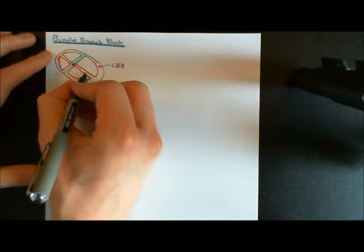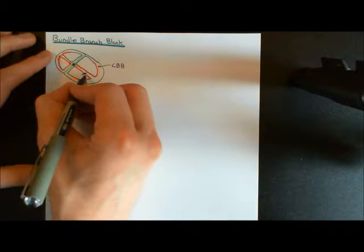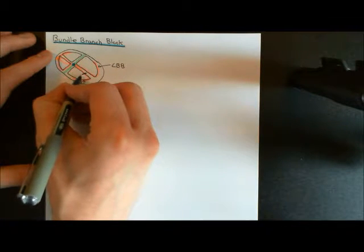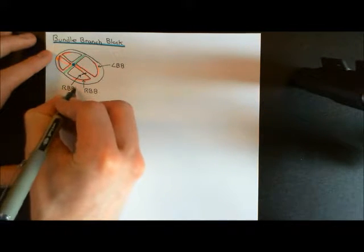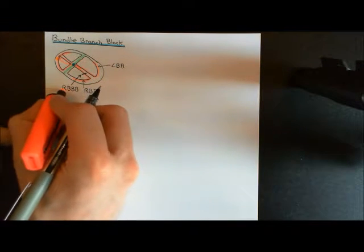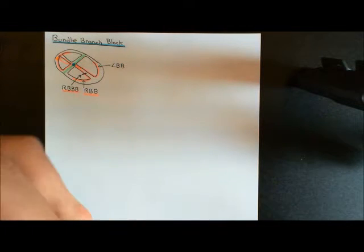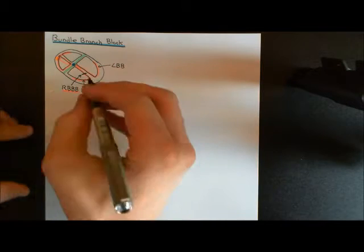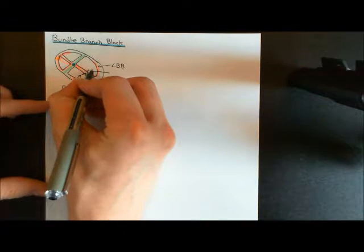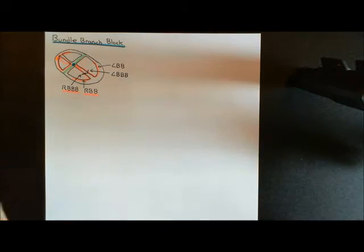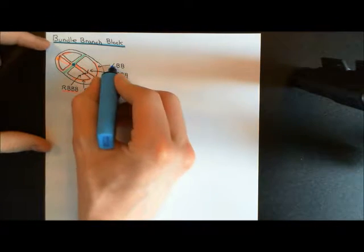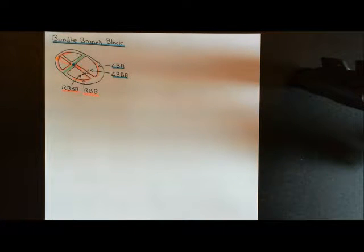In right bundle branch block, damage to the right bundle branch prevents the electrical signal from passing beyond that point — abbreviated RBBB (right bundle branch block). Equivalently, damage to the left bundle branch leads to left bundle branch block, abbreviated LBBB. These represent failure of the electrical signal to propagate beyond the point of damage on either side.